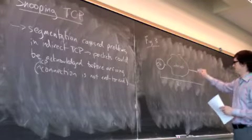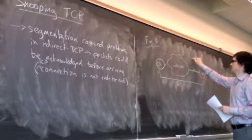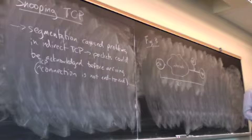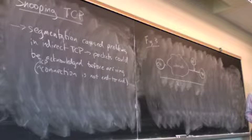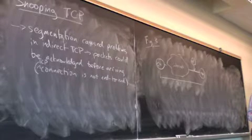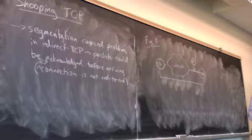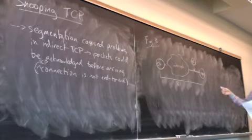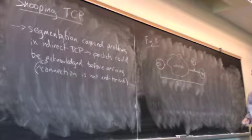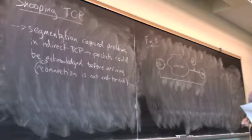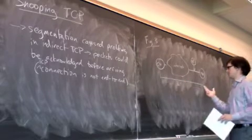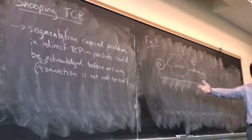And where the snooping comes in is that the access point sits here and inspects the TCP connection and helps as necessary. It can inject retransmissions to the mobile node and basically help out whenever it needs it. But the acknowledgement, packet transmission and acknowledgement, is end-to-end.